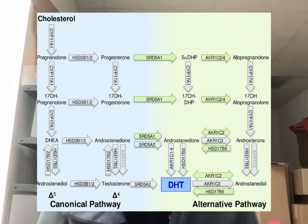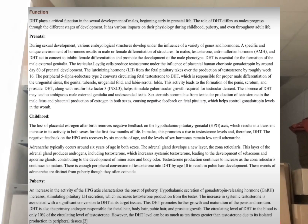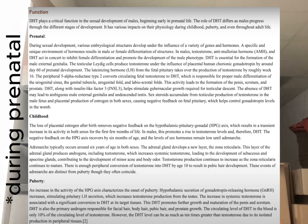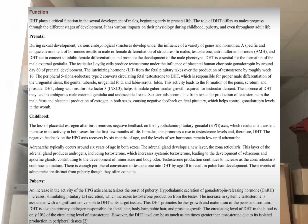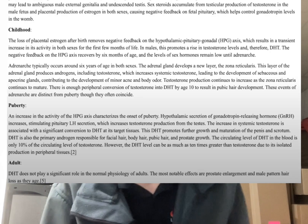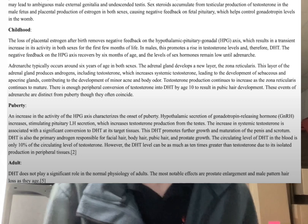So first, I'd like to go over dihydrotestosterone, or DHT for short. It is a byproduct of testosterone, typically around one-tenth of what testosterone levels are. Dihydrotestosterone is very important for fetal development when it comes to males, and especially secondary male characteristics in adolescence and puberty — usually things like the male sex organs, body hair, facial hair, just secondary male characteristics. But after puberty, it seems that dihydrotestosterone may not have too much importance.